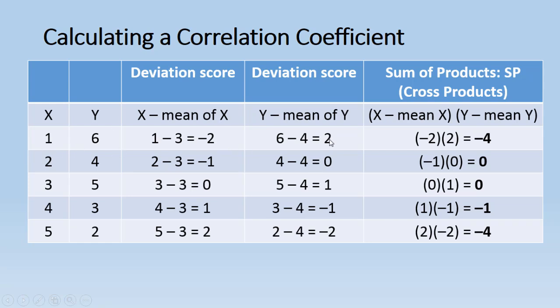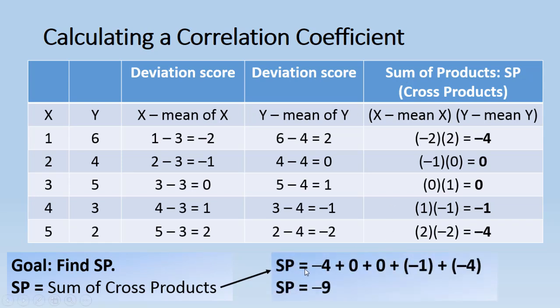So here we have negative 2 times positive 2. You see that here. This product is negative 4. Multiplying the deviation scores for the second person, negative 1 times 0. We see that here. That's 0. Third person, 0 times 1 is 0. The fourth person, 1 times negative 1 is negative 1. And then finally for the last person, 2 times negative 2 is negative 4. Now those are the cross products, and what we have to do is find the sum of them. So we have to add them up. We have negative 4, 0, 0, negative 1, negative 4. So that's what you see here, all added together. And that gives us a sum of the products of negative 9.